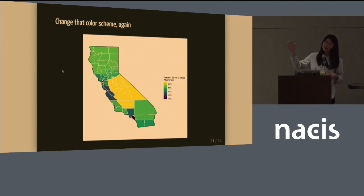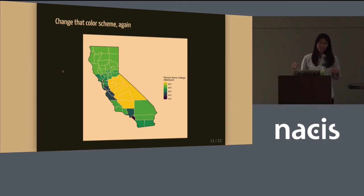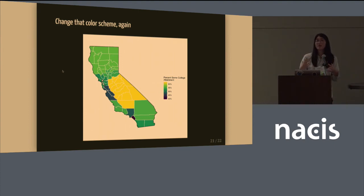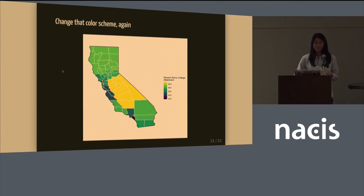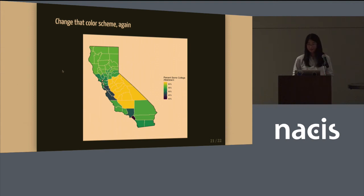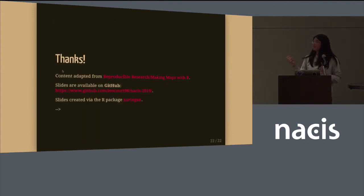Now I can see that the very northern part of California and a little farther south in Southern California are roughly the same in educational attainment, even though they're completely different regions of the state — and that is a lot more compelling to me as I go forth with this research and look for other reasons why some-college educational attainment across the state is all over the place. Overall, mapping in R is rather straightforward, really fast, super self-contained, iterable, and super reproducible. My slides are available on GitHub. Thank you very much.